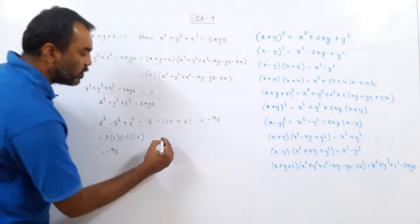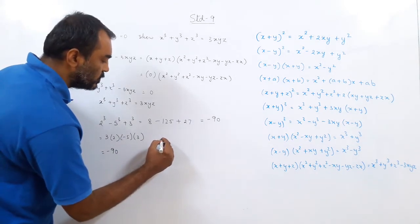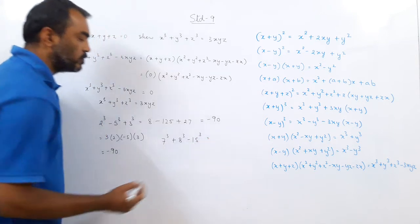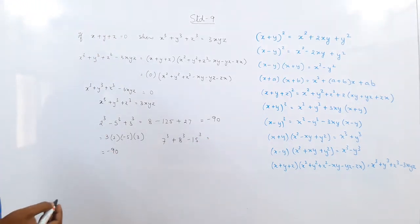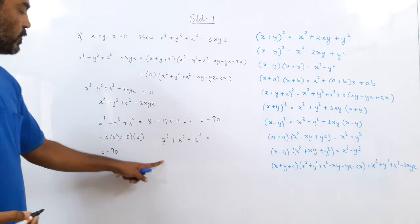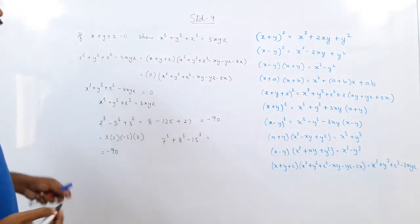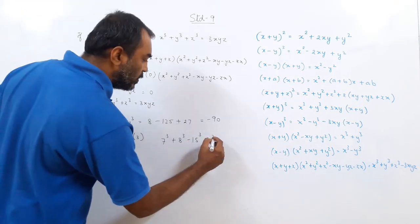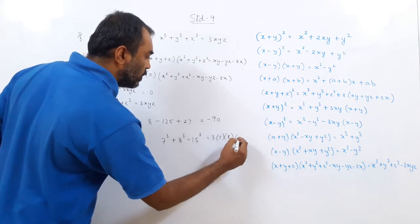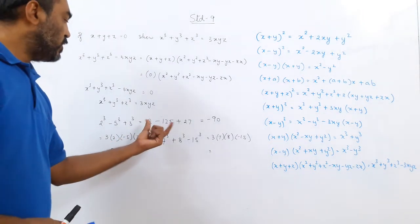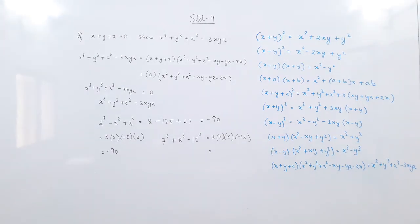Similarly for 7³+8³-15³: 7³=343 and 8³=512, but 15³ is a very large number. Instead, we notice 7+8-15=0, so x+y+z=0. The answer is directly 3×7×8×(-15), and we multiply this to get the answer — directly, without finding the actual cube values.